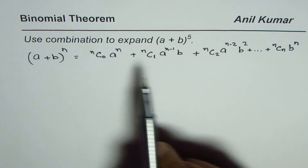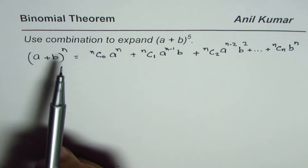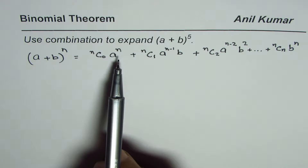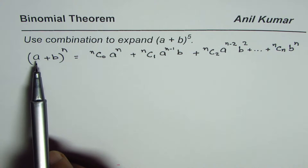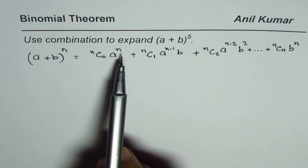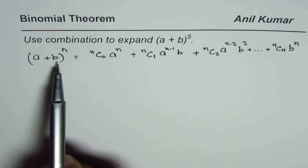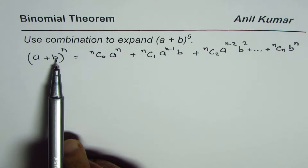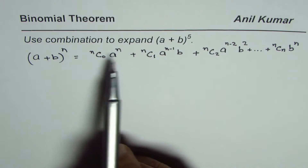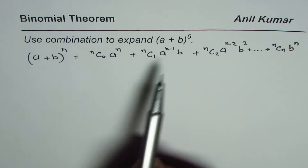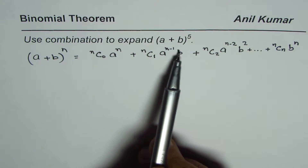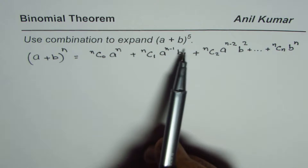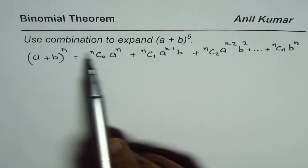In a binomial theorem the number of terms will be n plus 1. You will find that the degree for the first term decreases by 1 and for the second term increases by 1. It ends at n and the first one starts with n. The combination of these two degrees — when you add the exponents — will always be n.